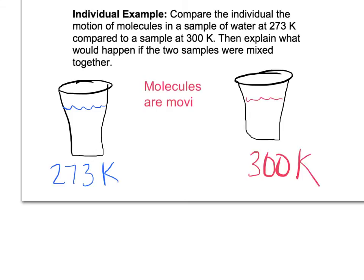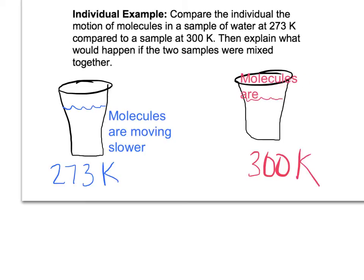slower compared to this side where the molecules are going to be moving faster. So again, the molecules are these little dots in here. They're going to have more velocity or more kinetic energy in the red cup or the warmer cup than they do in the blue cup.